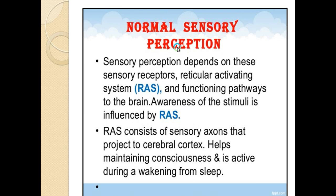With normal sensory perception, first is sensory receptors, and second is the RAS — the Reticular Activating System — along with functioning pathways of the brain. Awareness of stimuli is influenced by the RAS. Sensory perception depends on all these factors.